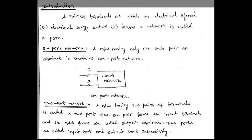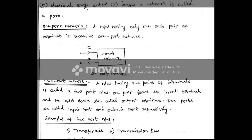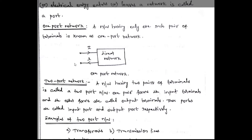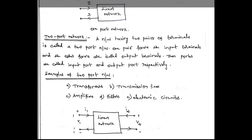There are different types of networks: one-port networks, two-port networks, and multi-port networks. A one-port network is a network having only one pair of terminals. A two-port network is a network having two pairs of terminals.